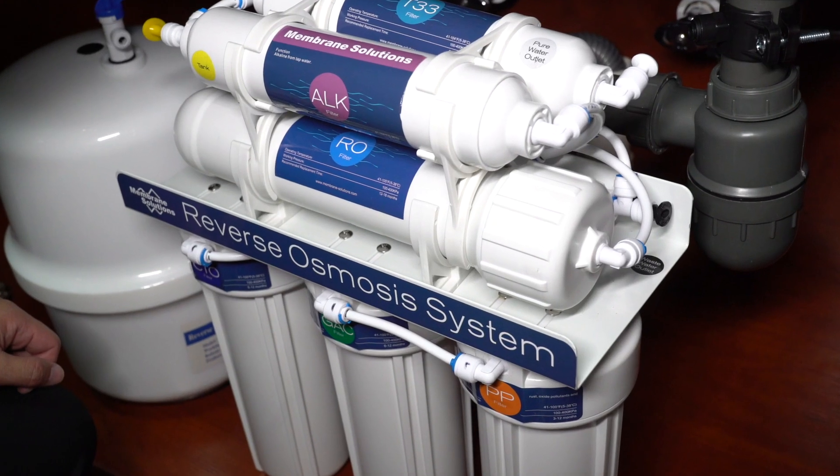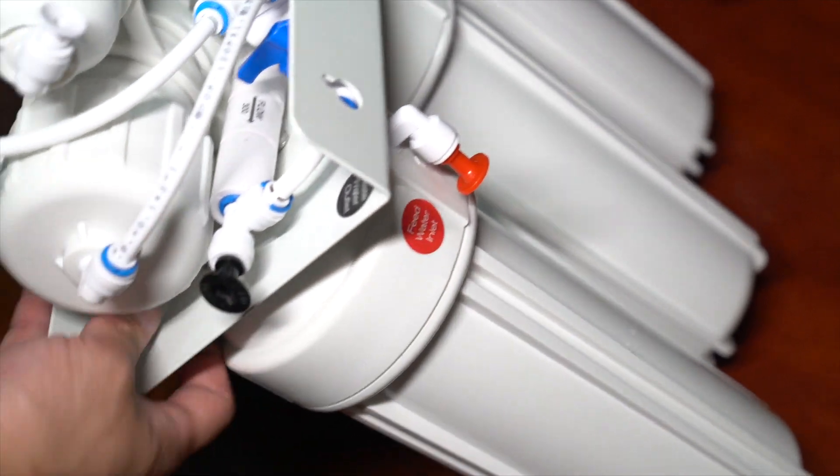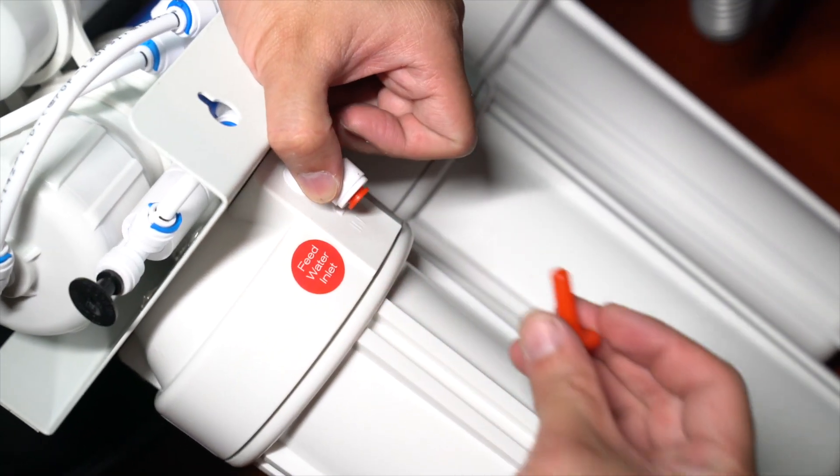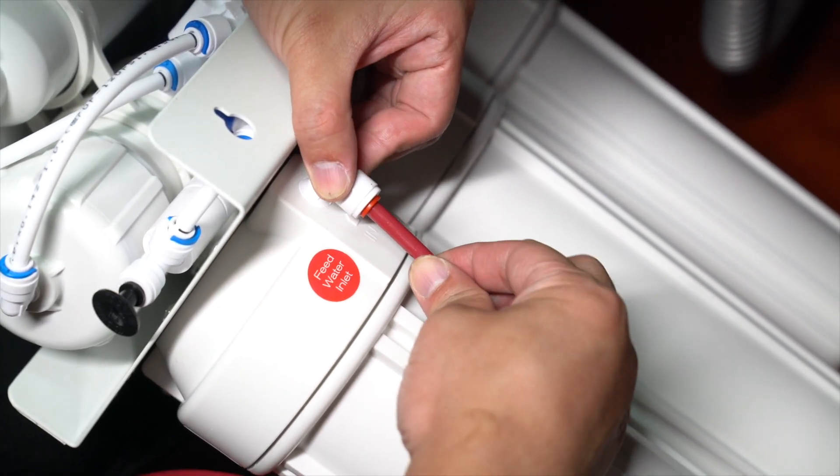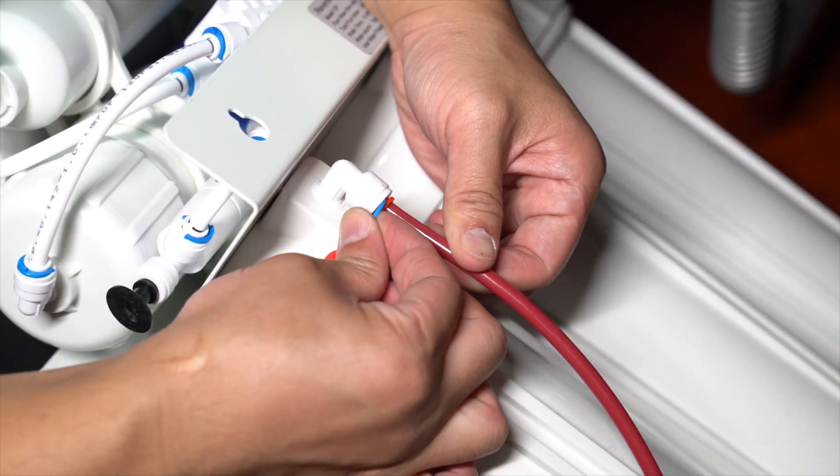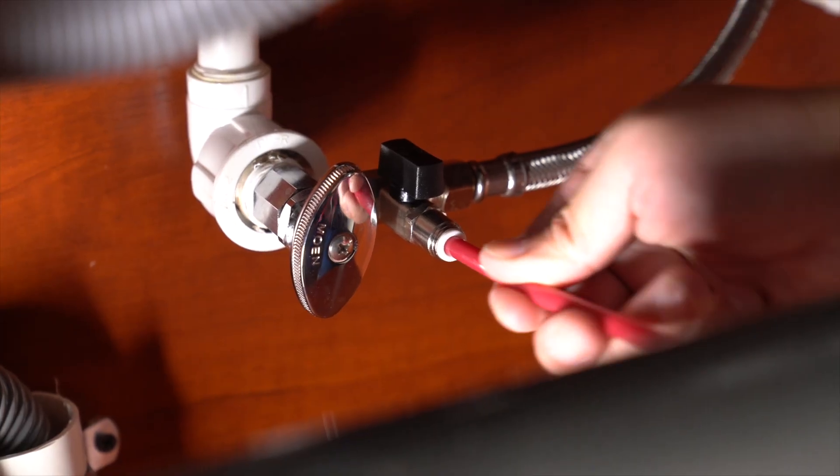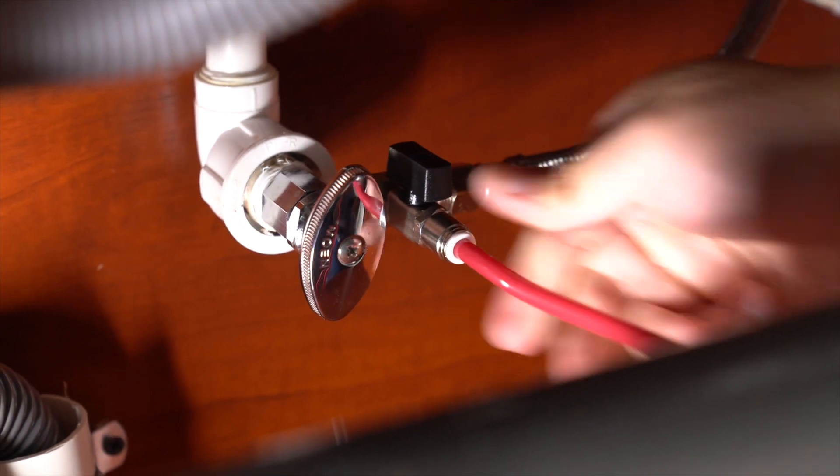Plumbing the system components together. First, pull out the red plug and insert the red PE tube. Lock it with the blue locking clip. Insert the other side of the red tube into the feed water adapter valve and lock it with the blue locking clip.